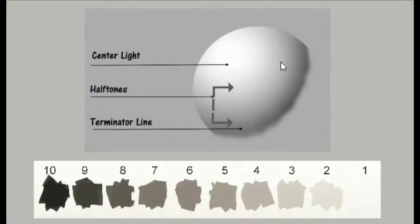The halftone label was given somewhere around the time in history when it became necessary to reproduce halftones for publication, such as newspapers or reproductions. So it's a language that is relatively new to our culture, nevertheless has stuck. One way we can think about it is that the tones halfway between the center light and the shadow — or the terminator — all those values are halftones.